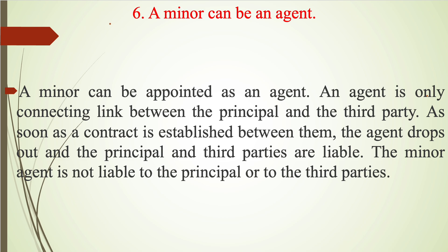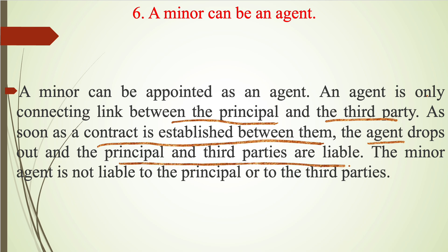Sixth, a minor can be an agent. A minor can be appointed as an agent. An agent is only a connecting link between the principal and the third party. As soon as a contract is established between them, the agent drops out and the principal and third parties are liable. The minor agent is not personally liable to the principal or to the third parties.